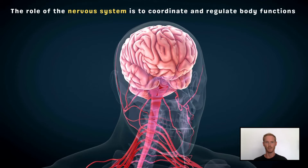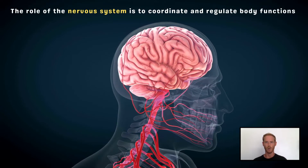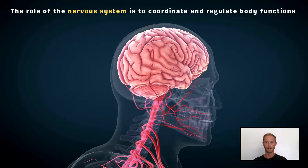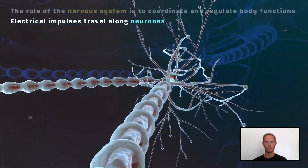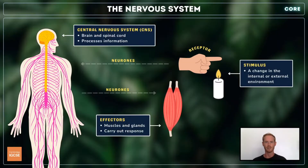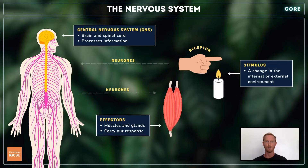The role of the nervous system is to coordinate the various organs and systems of the body so that the organism as a whole can function correctly. It's a communications network whereby signals, in the form of electrical impulses, are sent along nerve cells called neurons. Receptor cells in the sense organs detect stimuli in both the internal and external environment. They send electrical impulses to the central nervous system which consists of the brain and spinal cord. The central nervous system processes the information and then sends impulses to the muscles and glands, known as effectors, which respond accordingly. In this way the human nervous system plays an essential role in regulating and coordinating a host of bodily functions.